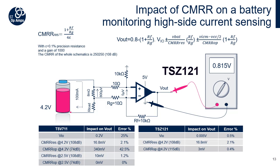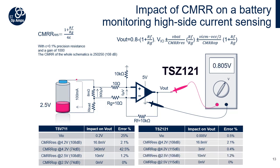As already seen with the TSV711, the main error was introduced by the CMRR of the op-amp. By choosing a more precise op-amp such as the TSZ121, which exhibits a very high CMRR of 115 dB, the main error is now introduced by the external resistors. With VCC at 4.2 V, the total error has been divided by 10 by using the TSZ121. Moreover, with a very precise op-amp, the error on the output will be roughly the same even with a different VBAT — which was not the case when using the TSV711. When the battery discharges, the resistors are impacted the most, so the error is the same as previously.